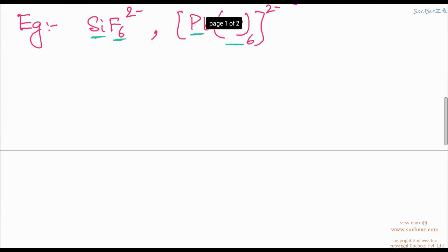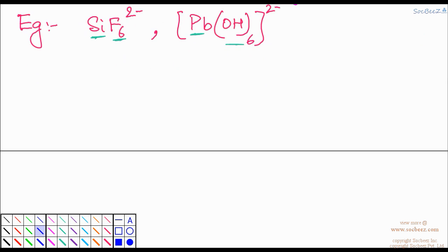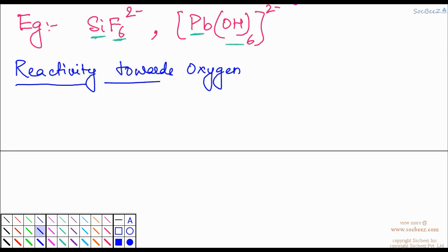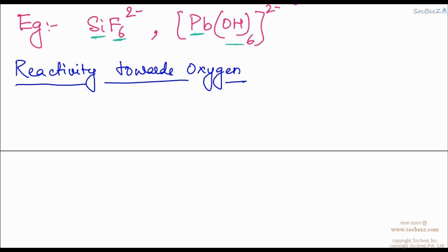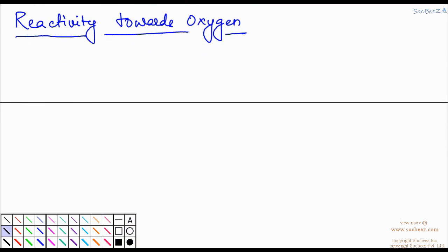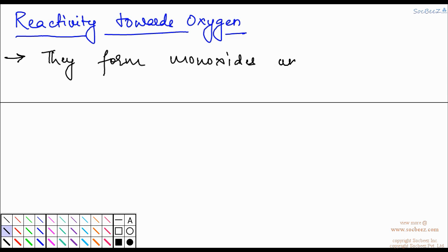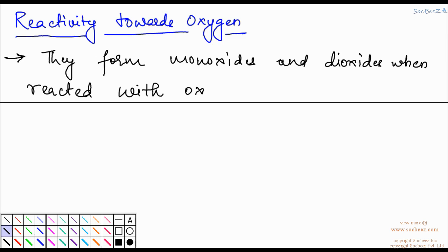Now the next property we would see is reactivity towards oxygen. Group 14 elements form monoxides or dioxides — that is MO or MO2 — when reacted with oxygen.